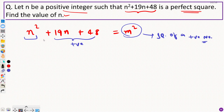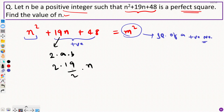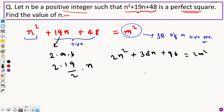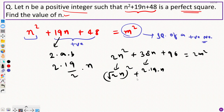Let's try to make it a perfect square: n squared plus 19n plus 48. This would be of the form (a+b)², but 19 is not divisible by 2ab. So I would have to write it as 2 times (19/2) times n, which creates some problems. So let's try multiplying by 2 on both sides: 2n squared plus 38n plus 96 equals 2m squared. But the problem persists — we'd end up with root 2 terms.